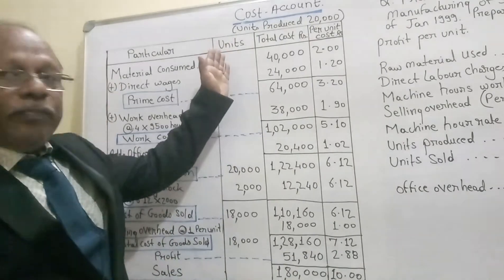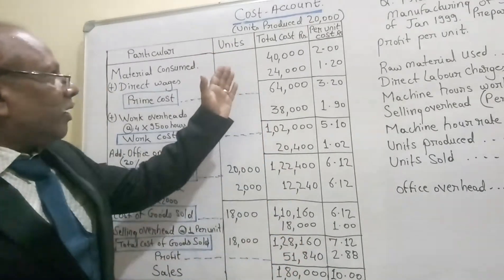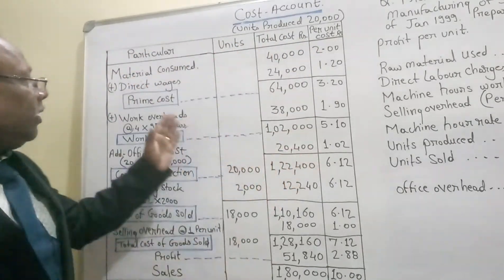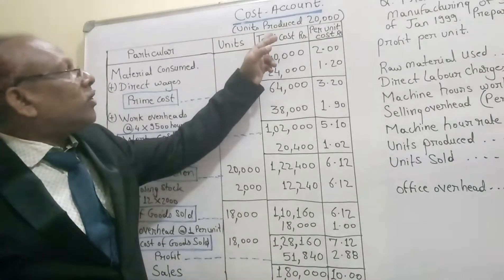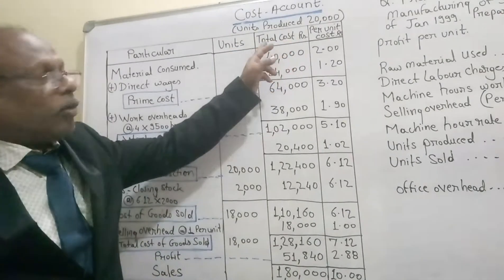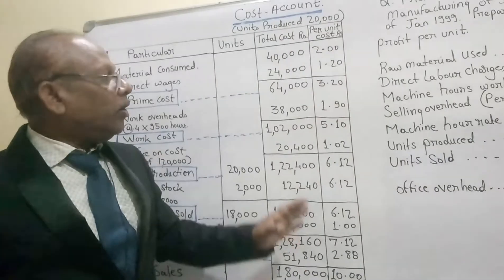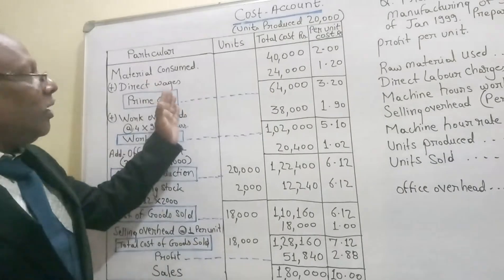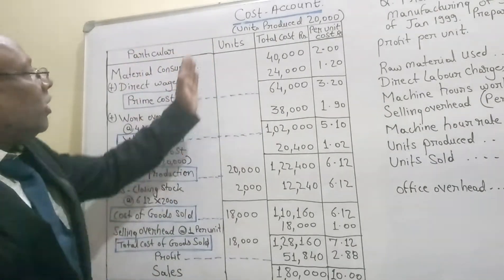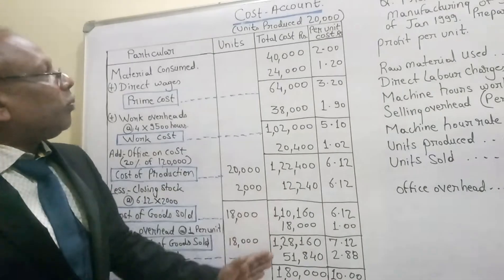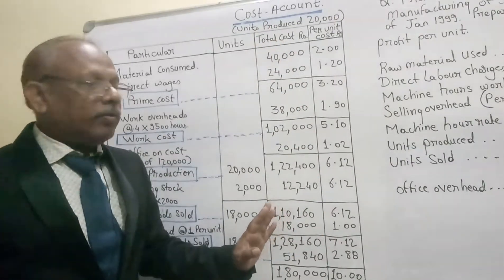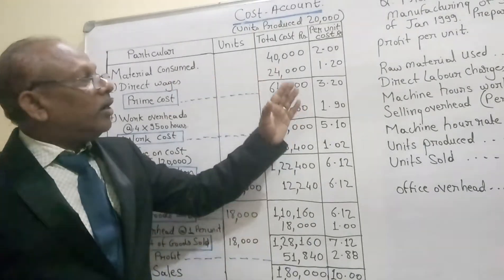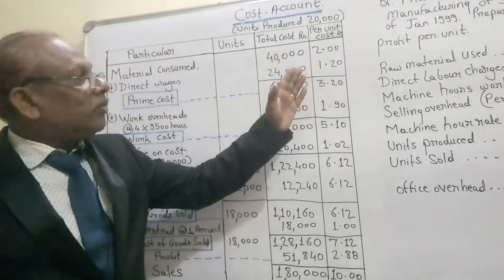Now let us discuss the solution. I have written 'Cost Account' and drawn a table. The table has columns for: Particulars, Units Sold, Cost in Rupees (total), and Cost Per Unit in Rupees. You have to sketch the table like this so that it includes particulars, units, total cost rupees, and per-unit cost.